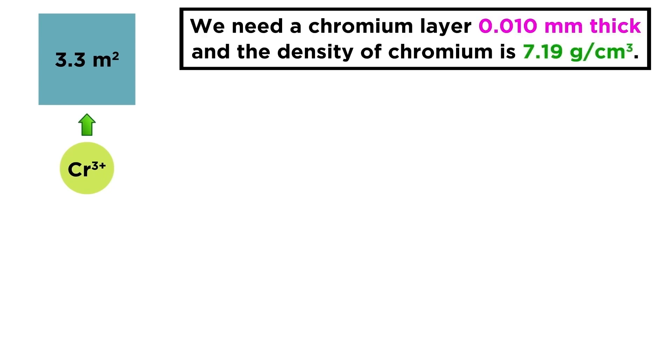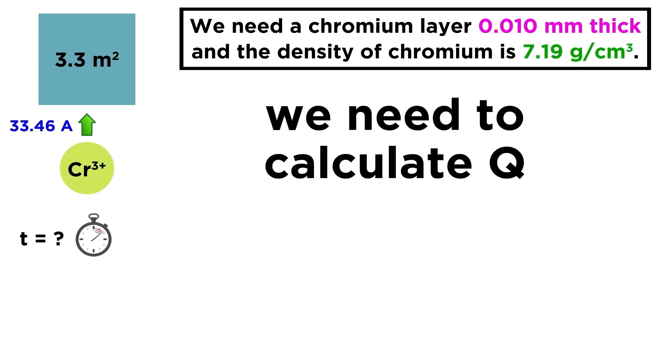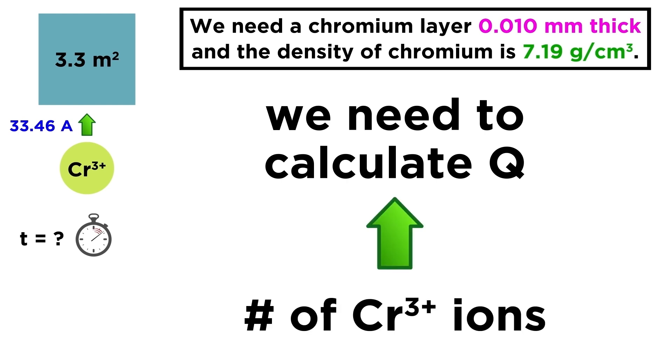Now let's try something a little trickier. Say we have a 3.3 square meter surface, and through electrolysis of a chromium-3 solution, we want to cover this surface with a 0.01 millimeter layer of solid chromium. If the density of chromium is 7.19 grams per cubic centimeter, and the current running through the cell is 33.46 amperes, how long will this take? Well first let's understand that we need to determine the total charge required for this to happen, and in order to do that we need to know how many chromium ions have to be reduced.